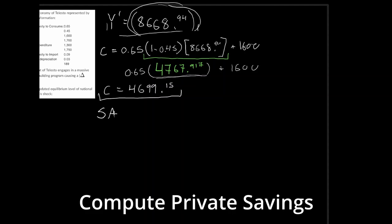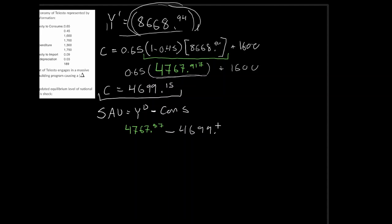For private savings: disposable income minus consumption = $4,767.92 − $4,699.15. That gives us our level of private savings.